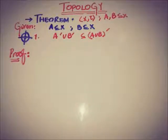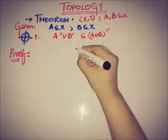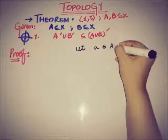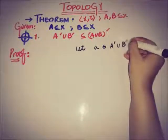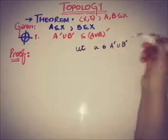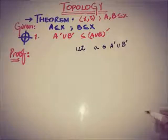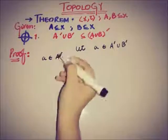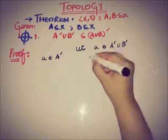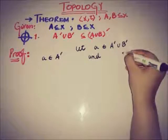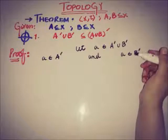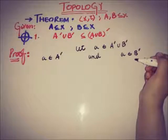We pick a random element a from A'∪B'. This implies, by the property of union, that a belongs to A' or a belongs to B'. We will use the definition of a limit accumulation point.